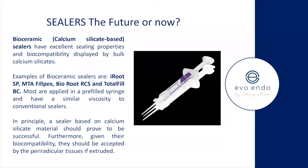Bioceramic sealers have been shown to be extremely biocompatible even if extruded into periapical tissues. I never aim for sealer puffs — I concentrate on what I'm taking out during cleaning and shaping. Don't sit there hoping for a puff. Think biologically — think about what you're trying to achieve, which is the eradication of bacteria. If a puff happens it may indicate how effective your cleaning and shaping was, or it may just reflect the anatomy of the root canal system.